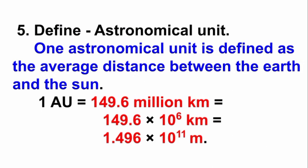Fifth question: Define astronomical unit. Answer: One astronomical unit is defined as the average distance between the Earth and the Sun. 1 AU = 149.6 million kilometers = 149.6 × 10⁶ km = 1.496 × 10¹¹ meters.